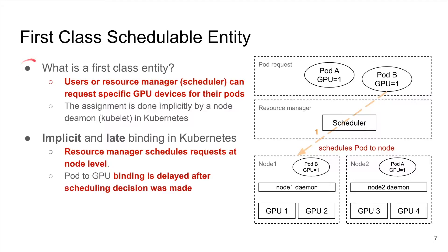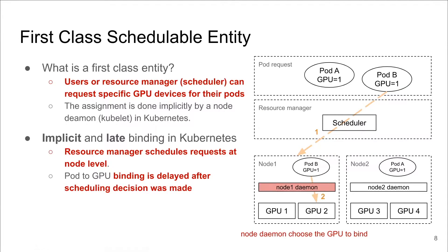First-class resource is important in a resource-sharing context, which means that users can request specific GPU devices for their pod. But this is not supported in Kubernetes, because the binding between GPUs and pods is implicit and late. The scheduler only schedules pods to a node, then the node daemon decides which GPU on the node will be assigned to the pod. As a result, binding happens after scheduling and the scheduler cannot control the binding result.